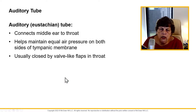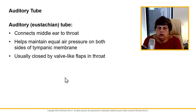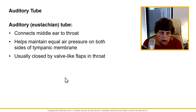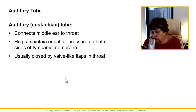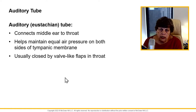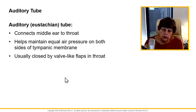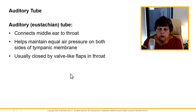Also in the middle ear is the Eustachian tube, or auditory tube. It connects the middle ear to the throat. Most of us know this is how we maintain air pressure — we hold our nose and blow — and that helps us equalize air pressure. There are valve-like flaps in the throat that are usually closed.